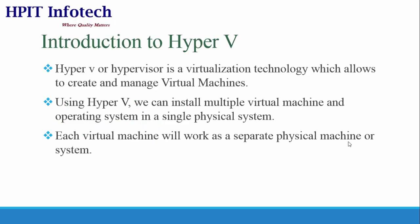Hyper-V is a virtualization technology through which we can create multiple virtual machines in a single physical system, and all those virtual machines will work as separate physical machines. For example, suppose we have to run multiple operating systems simultaneously — for that purpose we would need multiple physical machines, but using Hyper-V we can run multiple operating systems simultaneously in a single physical system.